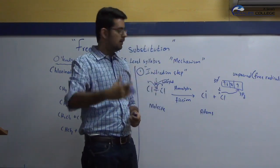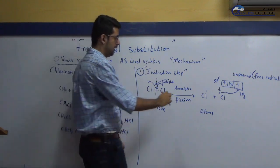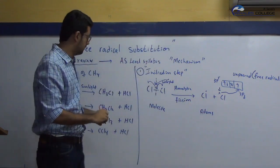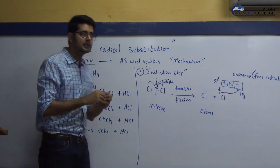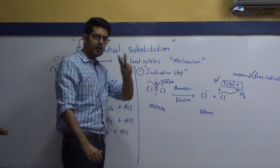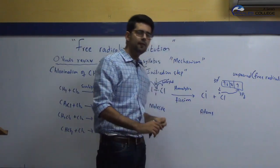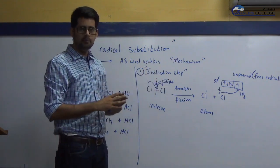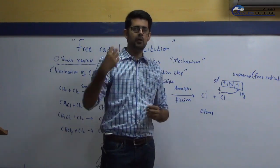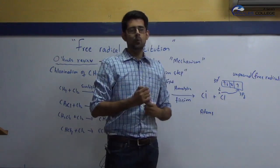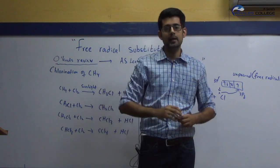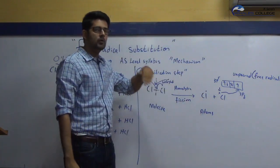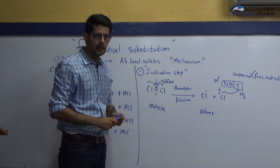These free radicals can collide back with each other and reform the chlorine molecule, or they can collide with the methane molecule — because remember, you initially mixed methane with chlorine. So there are two types of collision possible: between chlorine atoms themselves, which regenerates the chlorine molecule, or between a chlorine atom and CH₄. The chlorine molecule Cl₂ does not collide with CH₄ — it is the chlorine atoms that collide with CH₄, and this leads to the propagation step.